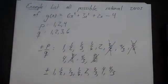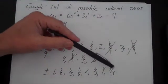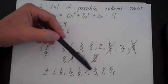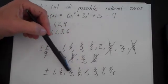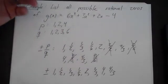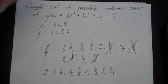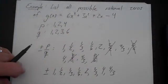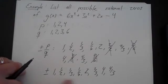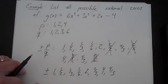Going back to this example — we're not saying there are 16 rational zeros. We're saying all rational zeros must be among these 16 candidates.